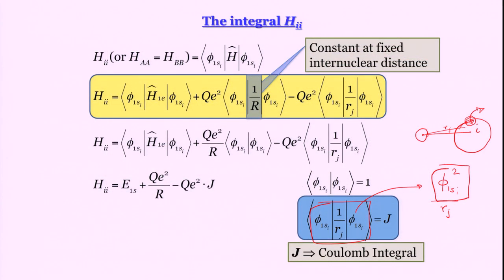The expression for H_ii is: first term E_1s, second term q-squared over capital R, third term minus q-squared times J. We now have H_ii, which appears in the expressions for E_1 and E_2. Next we need to evaluate H_ij.